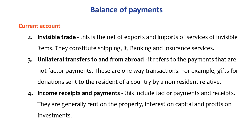The fourth component of the current account includes income receipts and payments. These include factor payments and receipts — generally rent on property, interest on capital, and profits on investments. So the four components of the current account are: visible trade, invisible trade, unilateral transfers, and income receipts or payments.